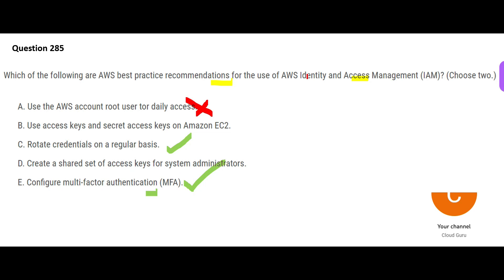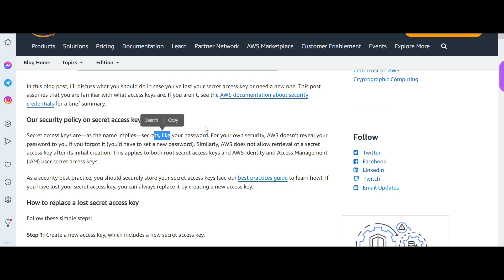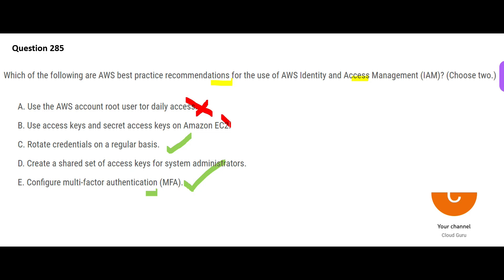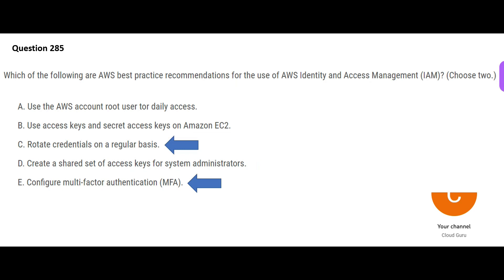Option A is totally wrong — never use the root user for daily access. Option B suggests using access keys and secret access keys on EC2 instances, but secret access keys are like passwords and should never be shared or exposed. Option D proposes creating a shared set of access keys for system administrators, but sharing credentials is always wrong. So the correct answers are C and D (MFA and rotating credentials).